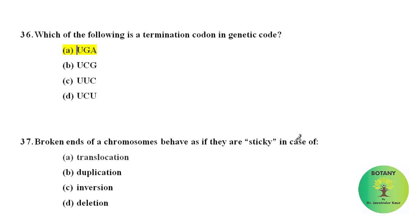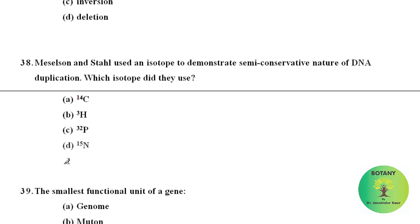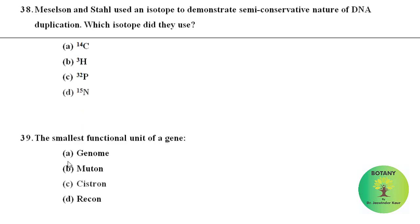Broken ends of a chromosome behave as if they are sticky in the case of translocation. Meselson and Stahl used an isotope to demonstrate the semi-conservative nature of DNA duplication. The isotope they used was nitrogen-15.